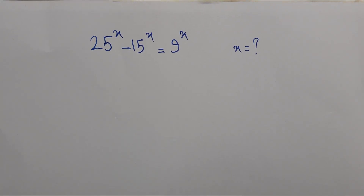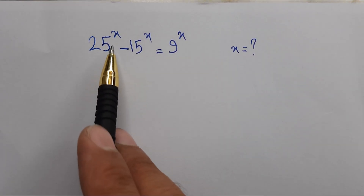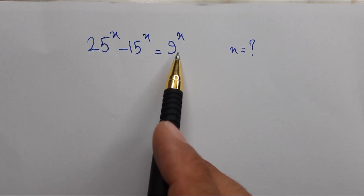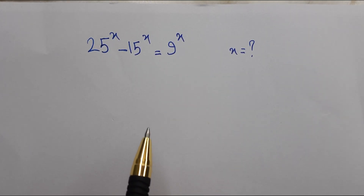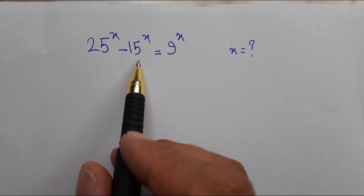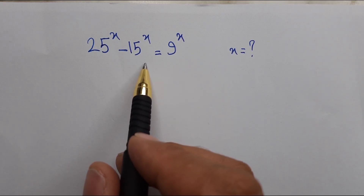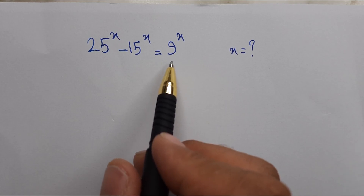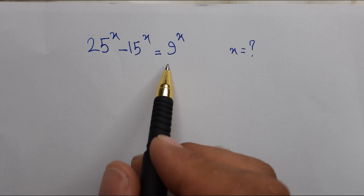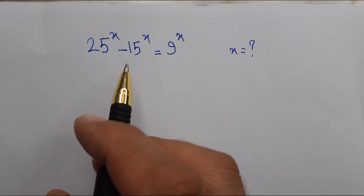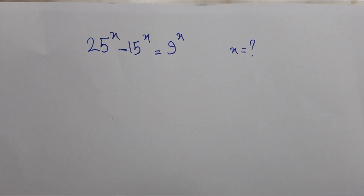Hi guys, we have a question: 25^x minus 15^x equals 9^x — we need to find x. Notice that 15 is 3 times 5 and 9 is 3 times 3, so they share a common factor of 3. We can divide both sides by 9^x.